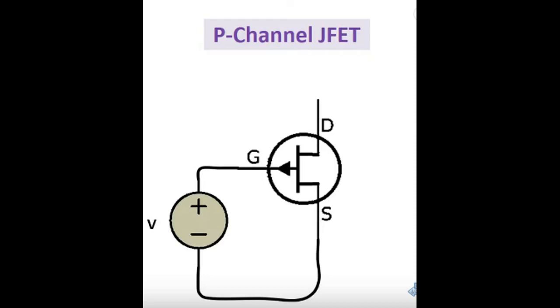The positive pin of the source must be connected to the gate of JFET and the negative pin to the source. This is difference between two types.